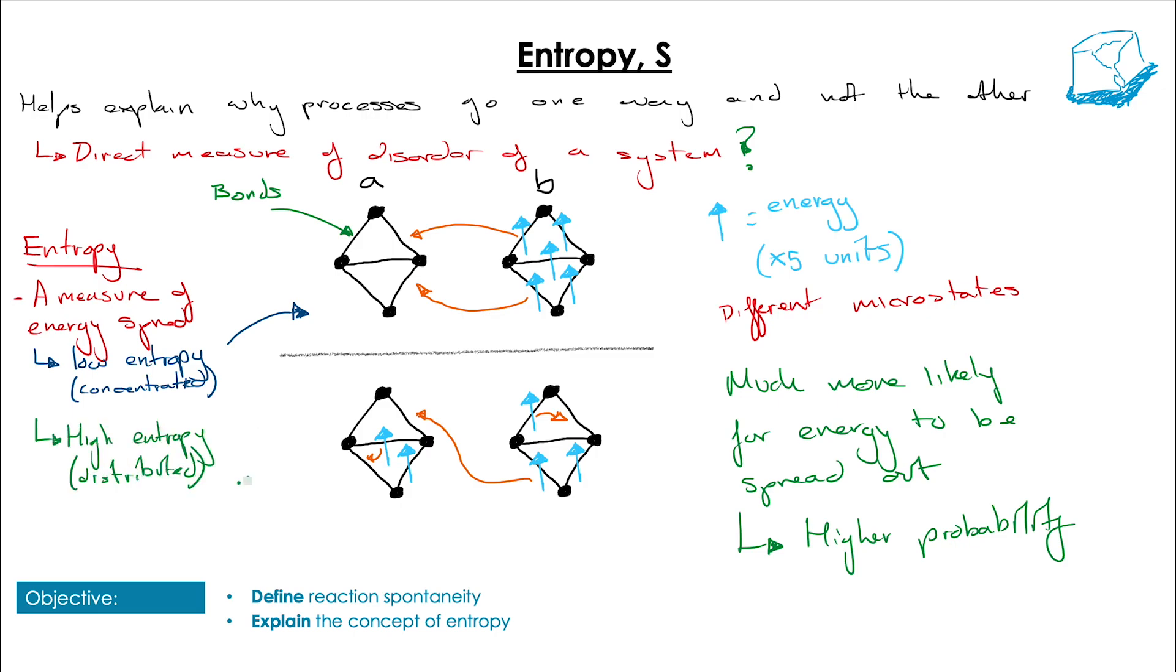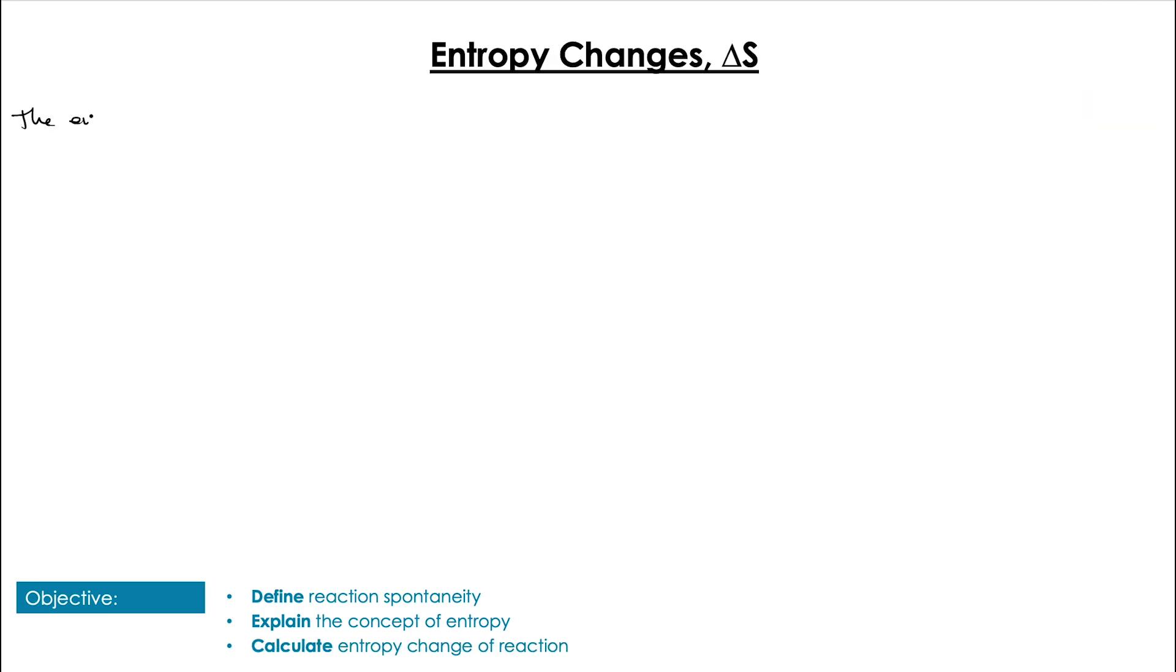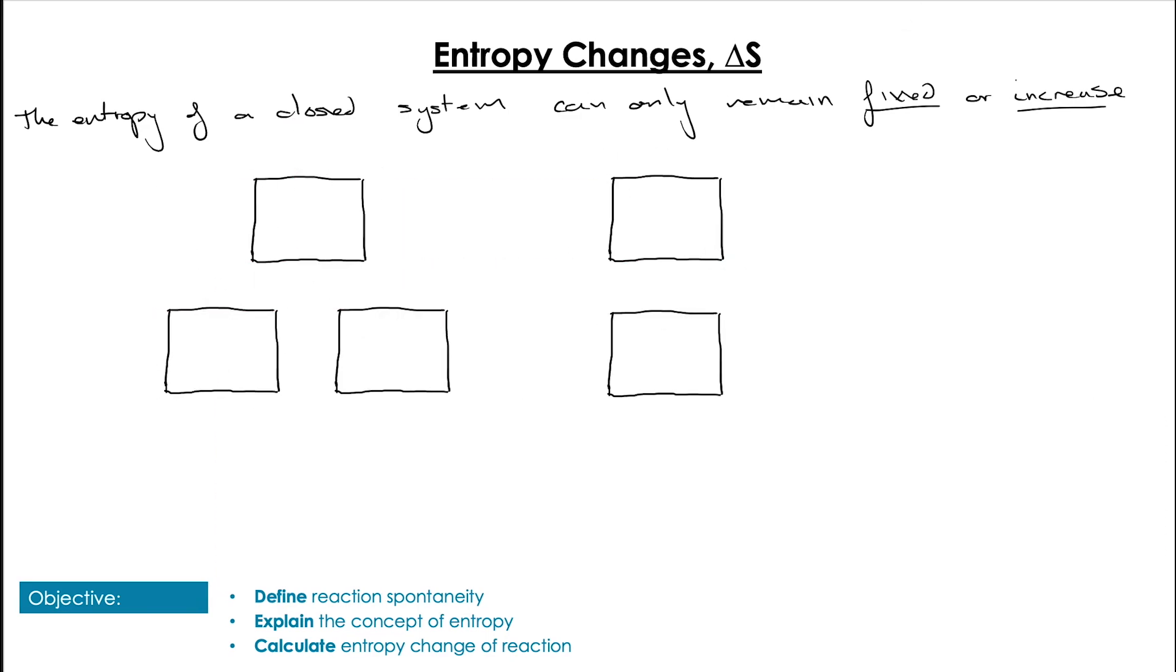And when we consider systems that are actually much more like real life, much larger systems like the melting ice block, the number of molecules and the amount of energy present is so large that the probabilities of entropy decreasing become incredibly small. Now that means for closed systems which is going to be the vast majority of systems we study at IB the entropy can only remain fixed or increase.